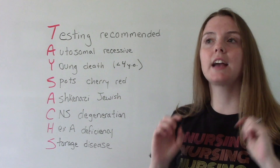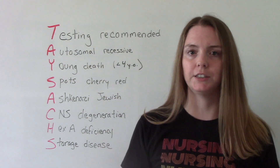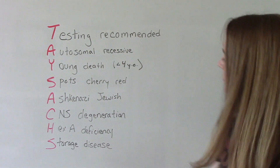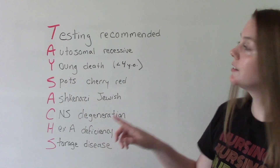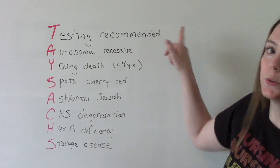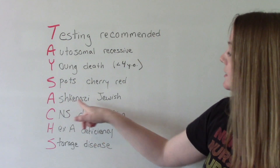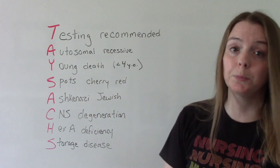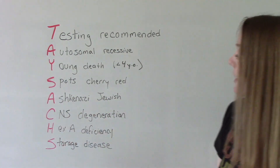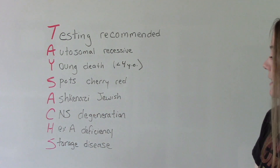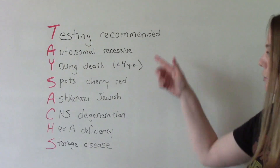S is for cherry red spots, which are found in the eyes. This is the hallmark symptom we're looking for in these patients. A population that is at higher risk — and for whom testing would be recommended — would be Ashkenazi Jewish people.